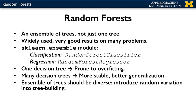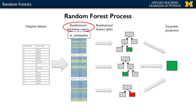This difference is accomplished by introducing random variation into the process of building each decision tree. This random variation during tree building happens in two ways. First, the data used to build each tree is selected randomly. And second, the features chosen in each split test are also randomly selected.